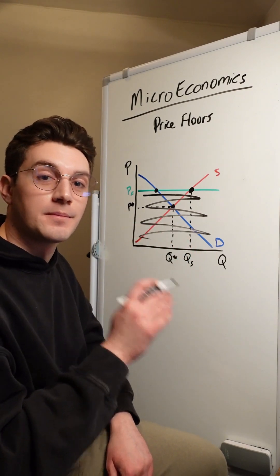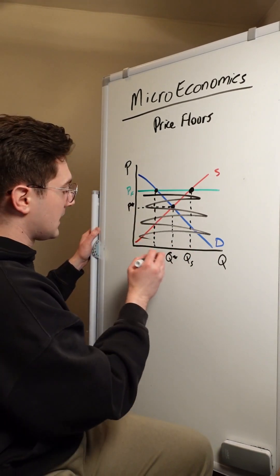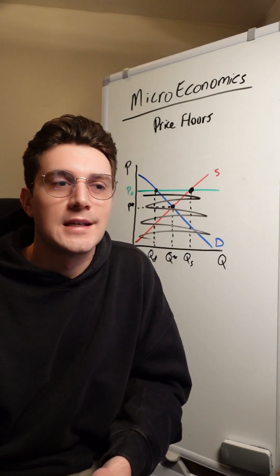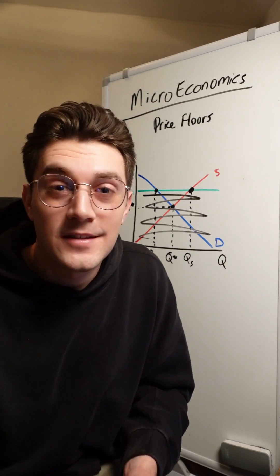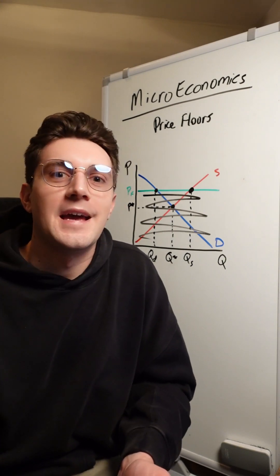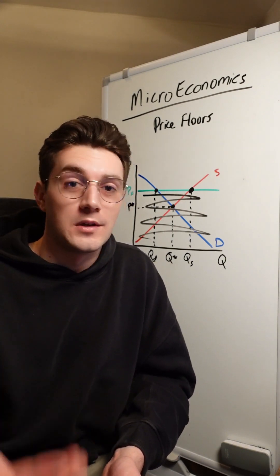Now from a consumer POV, they're now going to demand less from the market. And from our perspective, this is a little bit easier to understand. Imagine the government says pizza slices cannot be sold for less than 20 bucks. You're going to just demand less pizza slices because it's way too expensive for you.